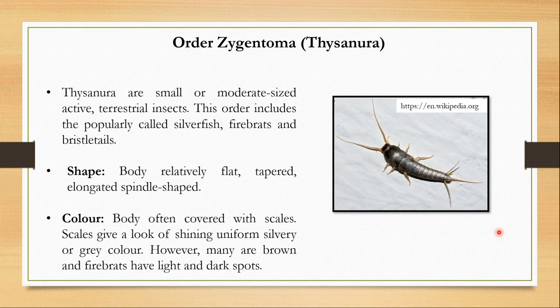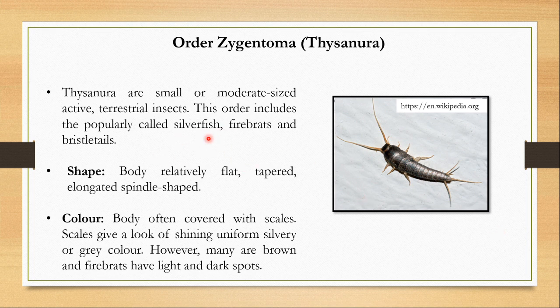Now let's look at their characters. Zygentoma are small to moderate-sized, active, terrestrial insects. You must have seen them at home in your clothes almirah or on your bookshelf. They move really fast and have a shining body. This order includes the popularly known insects: silverfish, firebrats, and bristletails.